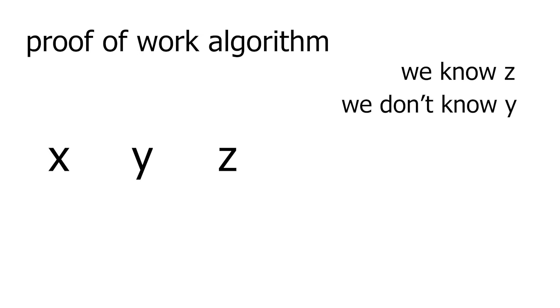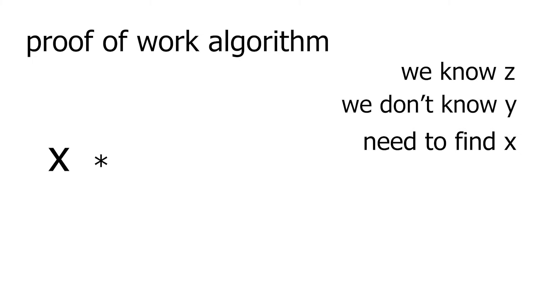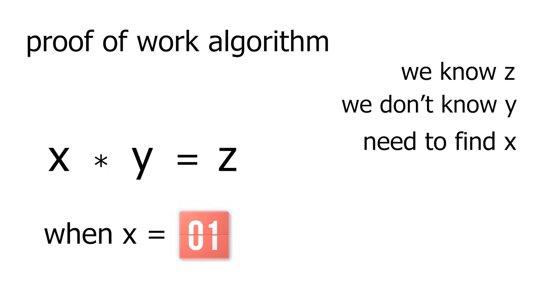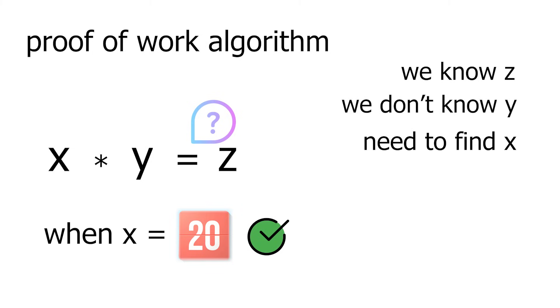There's technically an infinite amount of proof of work algorithms, but the simplest way to understand this is: imagine there are three variables X, Y, and Z. We're given Z, don't know Y, and have to find a value for X such that X times Y equals Z. To solve this we start by guessing any value for X — say 1. We multiply 1 times Y and the only feedback we get is if this value is equal or not equal to Z. If it's not, we try another value like 2, 3, and every number until we get X times Y equals Z. Once we have this value for X, we've solved this specific proof of work algorithm. This value for X is stored in our block and affects our hash, making it the correct one.